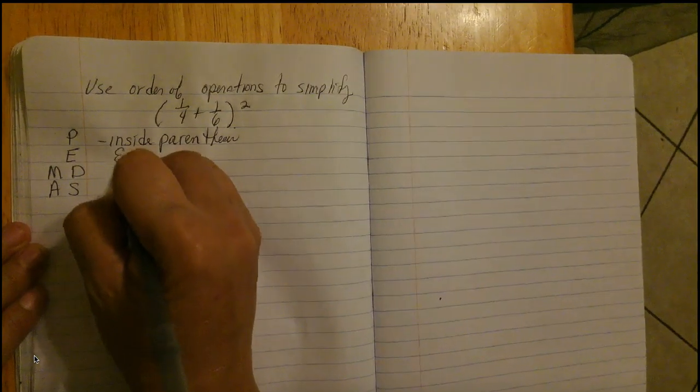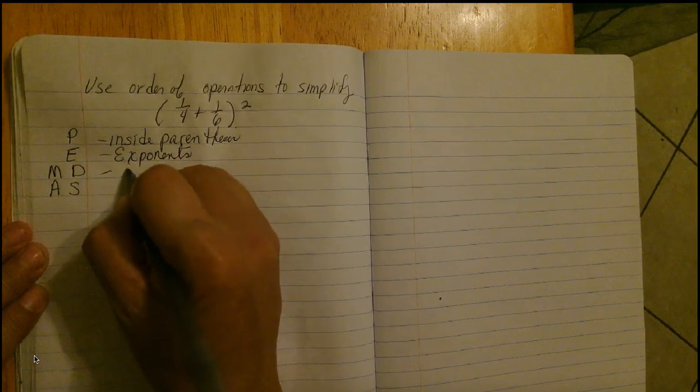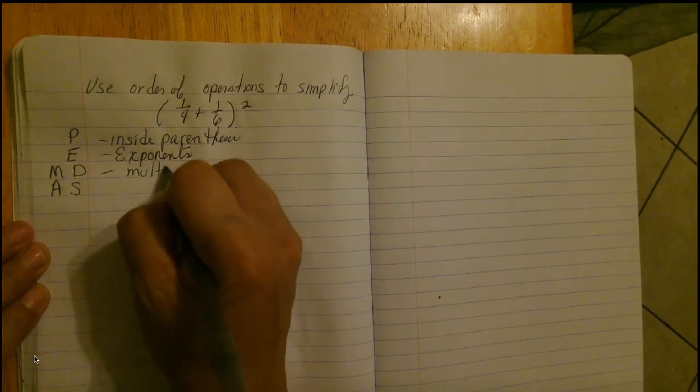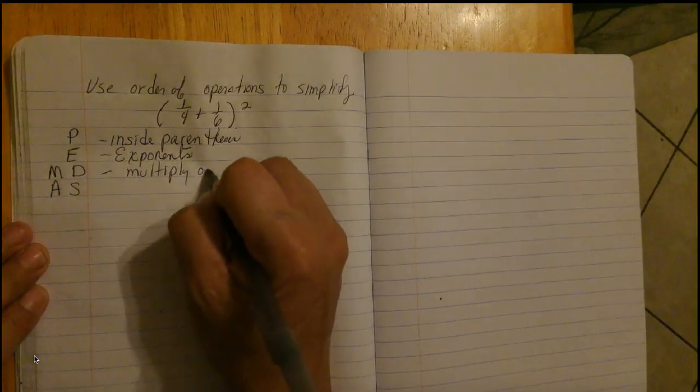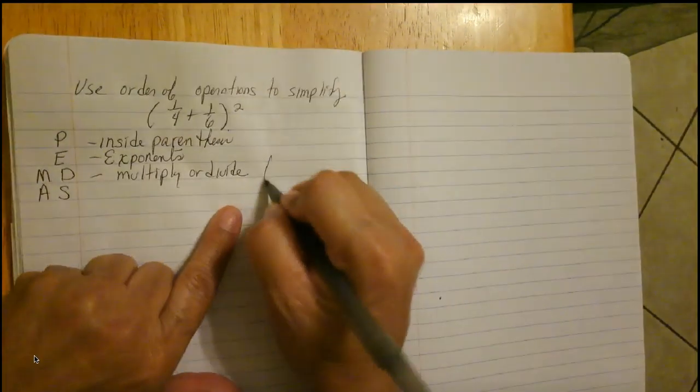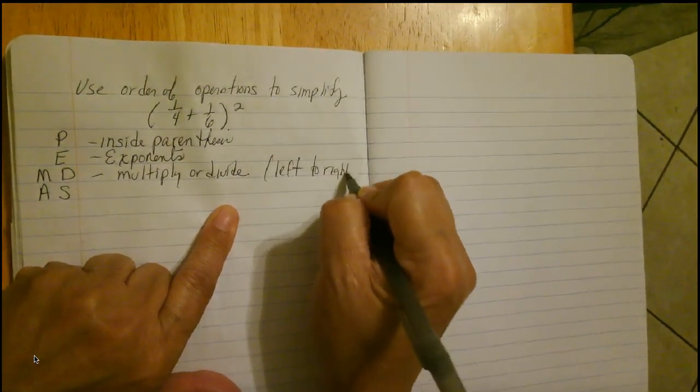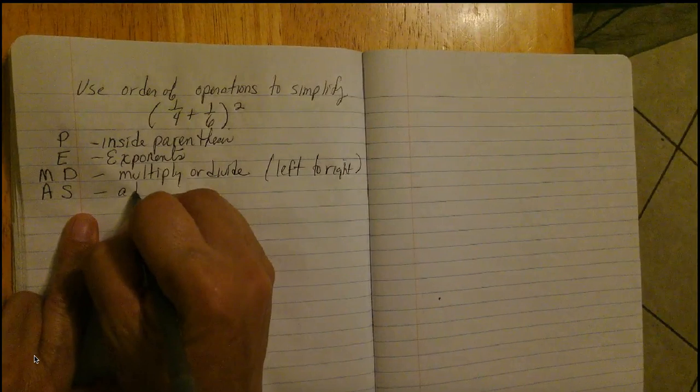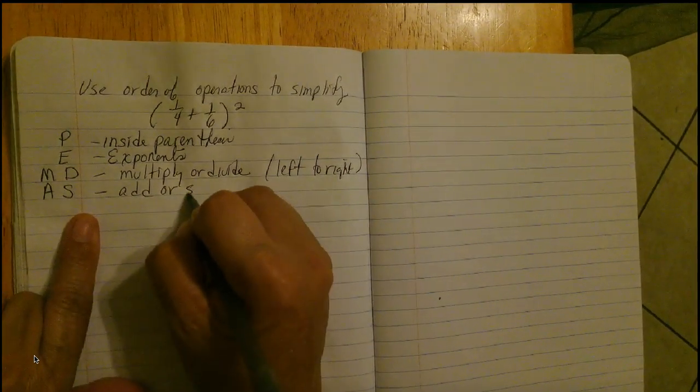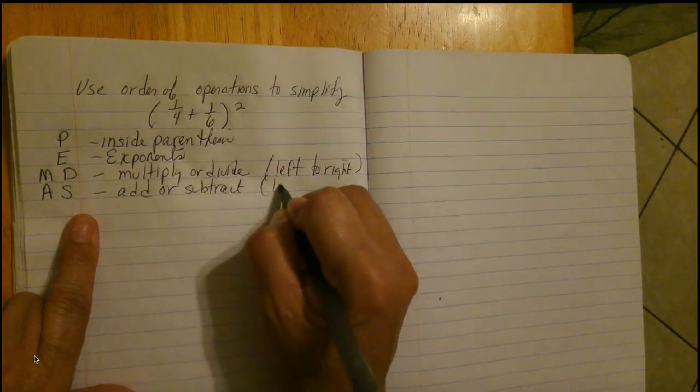Then we work with our exponents. Next, we multiply or divide, left to right. And the last thing we do is add or subtract, again, left to right.